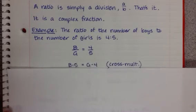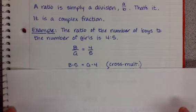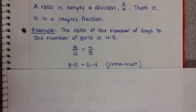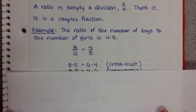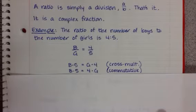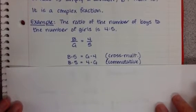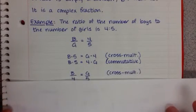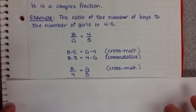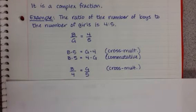Well, if we use our theorem of cross multiplication, we get B times 5 is equal to G times 4. Remember, these are also equivalent fractions. Well, if you can use the commutative property on one side, G times 4 can also be written as 4 times G. So let's say we back this up and put it back into a ratio, then using cross multiplication but using it backwards, we can also say that B to 4 is the same as G to 5.